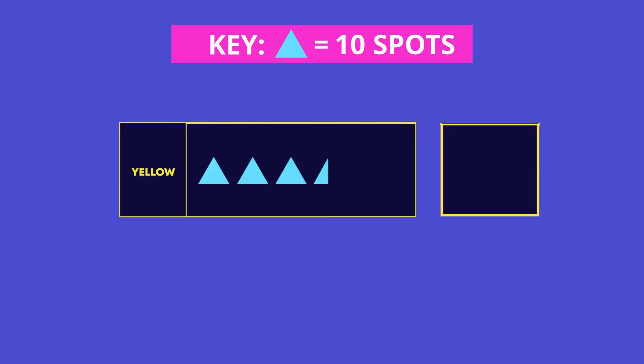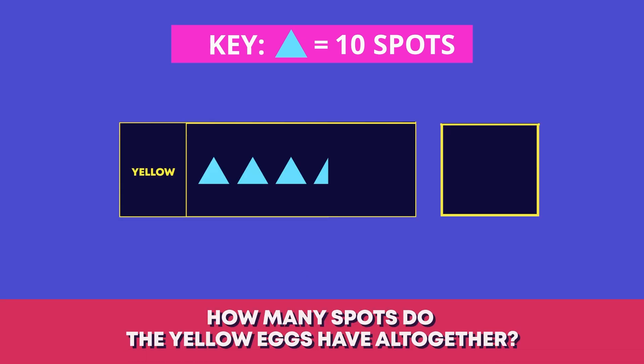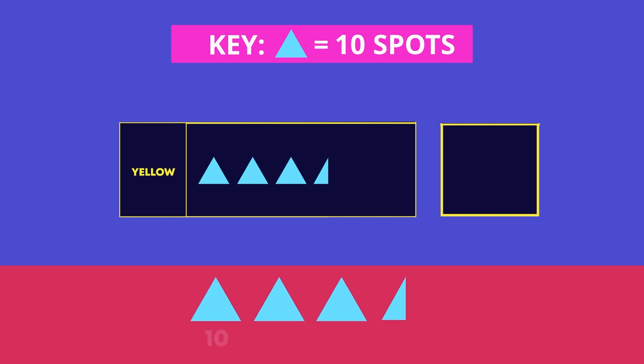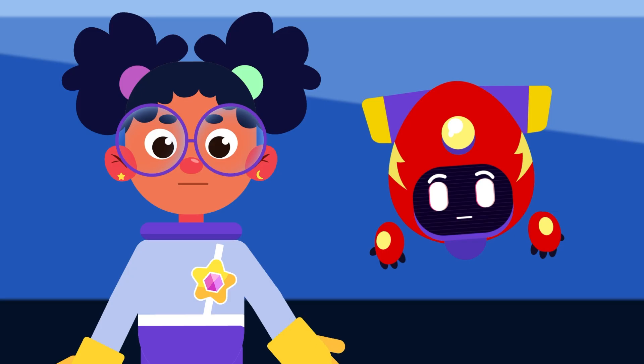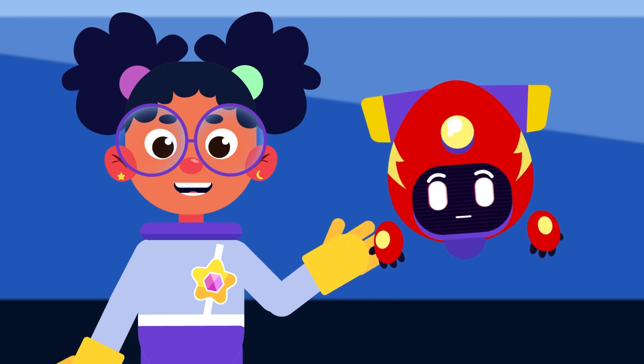Let's fill in this missing total. How many spots do the yellow eggs have altogether? 10, 20, 30, 35. Well done everyone, your counting was spot on! See you next time for our last dinosaur challenge.